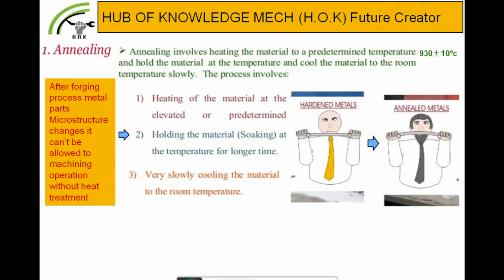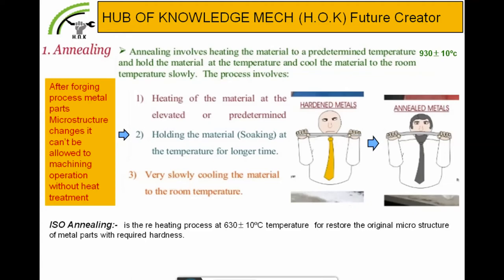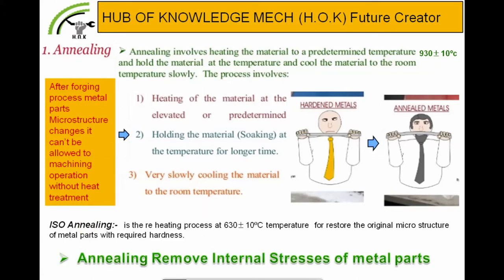This is the annealed metal. ISO annealing is the reheating process at 630 ± 10°C to restore the original microstructure of metal parts with required hardness. In ISO annealing, the material is reheated after annealing at 930°C to maintain its hardness and ductility. This annealing removes internal stresses of metal parts.